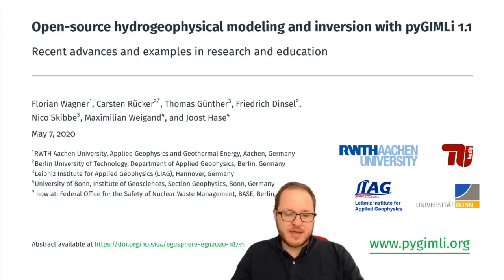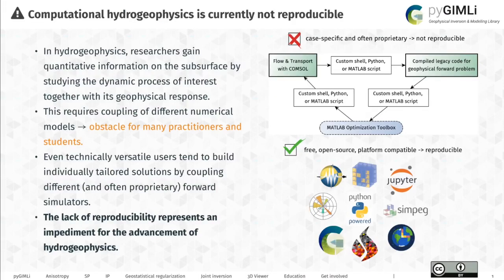We are in the hydrogeophysics session here and to give a bit of motivation, we argue that the current state of computational hydrogeophysics is not reproducible. We want to get a process-based understanding of geophysical methods — simulate dynamic processes, couple that to petrophysical models, make a process-based geophysical forward simulation, and potentially incorporate that in an inverse framework. This requires different simulators and model coupling, which can get complex quickly if we use commercial software packages and customized shell scripts. The hypothesis is that this lack of reproducibility hinders the advancement in computational hydrogeophysics. Luckily, there are a lot of powerful open source packages out there, and we want to present one of them.